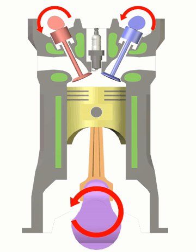Combustion, also known as power or ignition. This is the start of the second revolution of the four-stroke cycle. At this point the crankshaft has completed a full 360-degree revolution. While the piston is at TDC, the compressed air-fuel mixture is ignited by a spark plug in gasoline engines or by heat generated by high compression in diesel engines, forcefully returning the piston to BDC. This stroke produces mechanical work to turn the crankshaft.